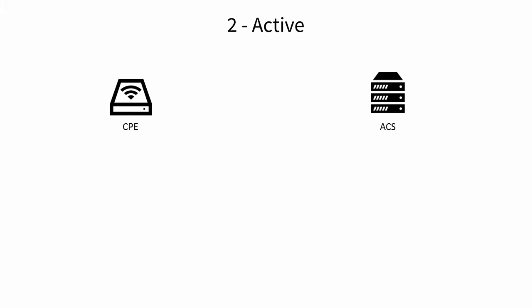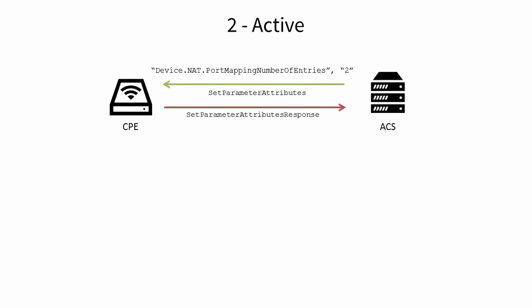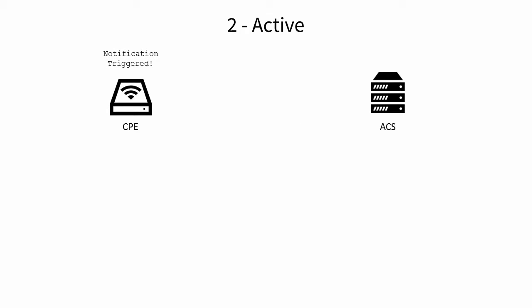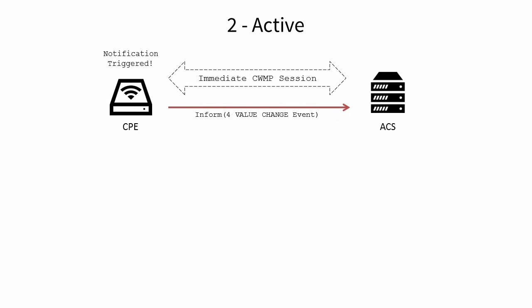Setting a parameter for active notification means that, should the value of the parameter change, the CPE must immediately initiate a CWMP session to inform the ACS of the change, including the 4 VALUE CHANGE event code and the parameter value in the Inform RPC. The setting of active notification can be rejected for parameters that are transitory or change frequently at the CPE's discretion. For example, setting active notification on the uptime parameter would cause endless CWMP sessions.